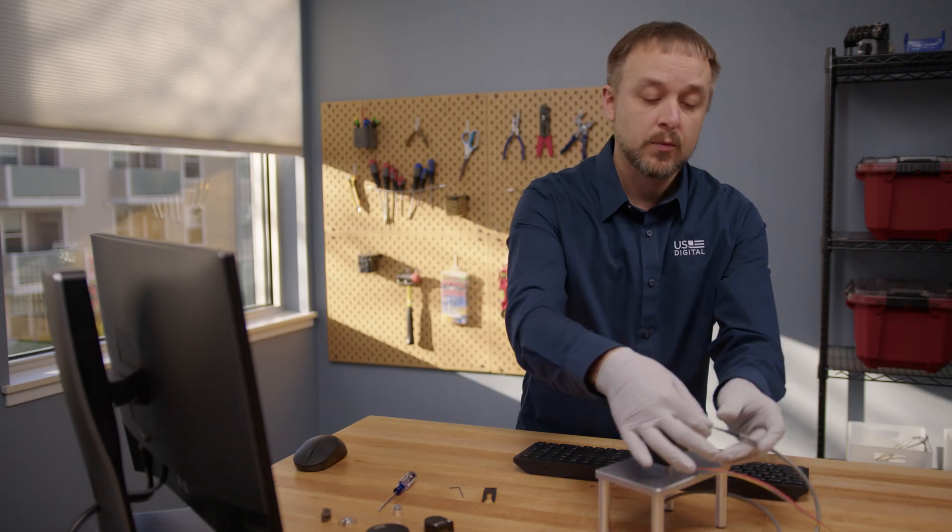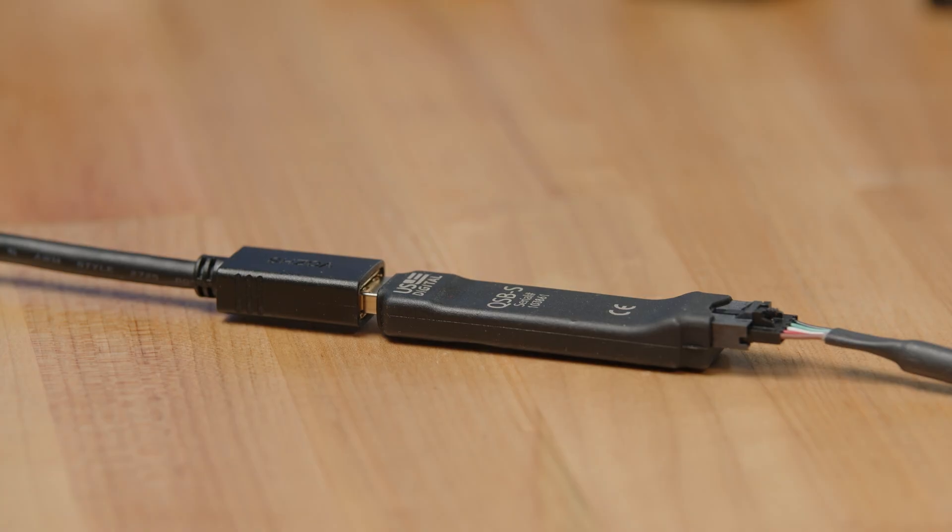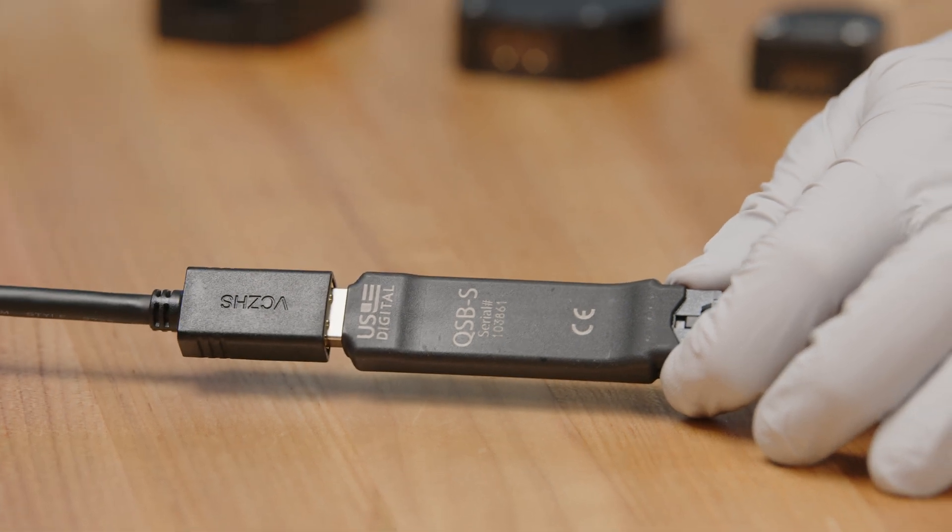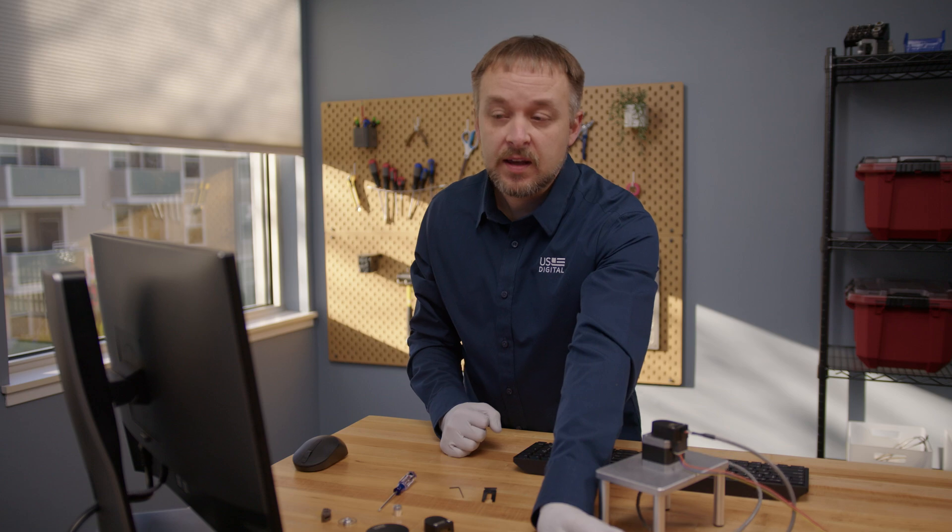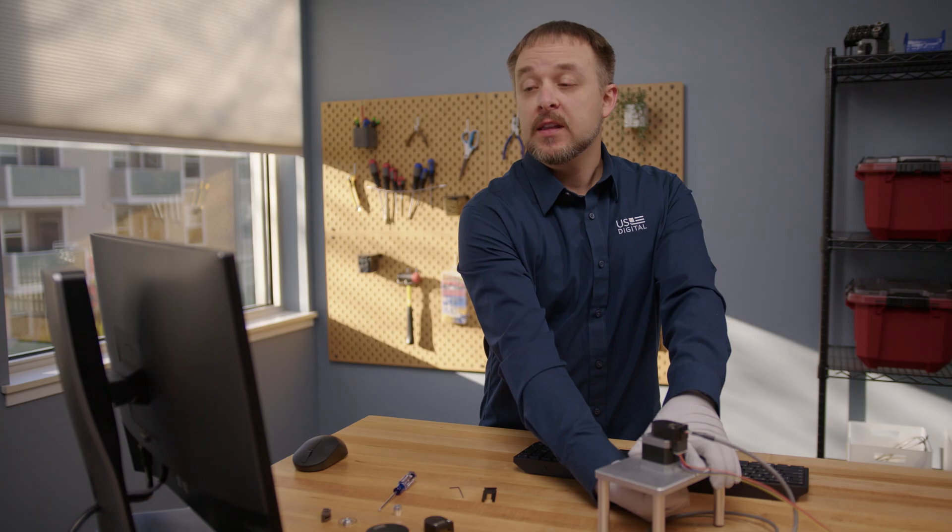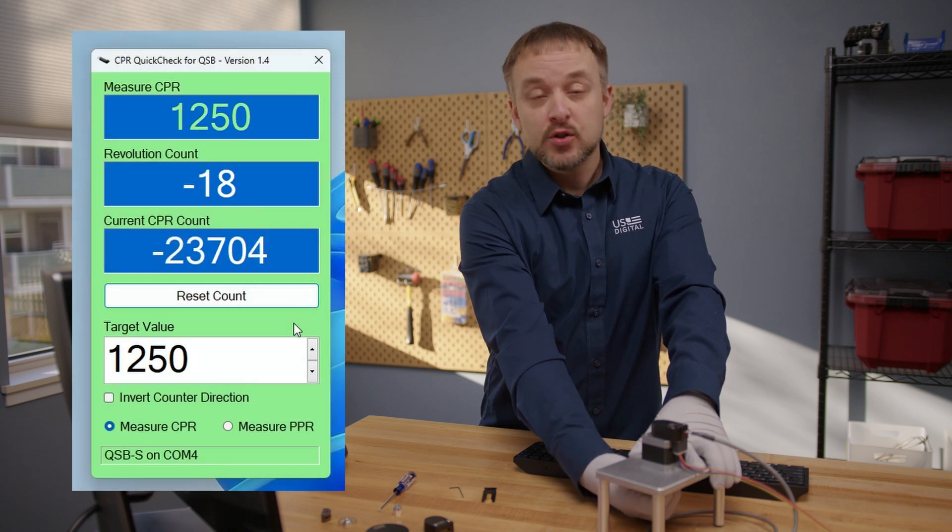So now we can run our test. For this test, we are using our QSB encoder to USB adapter, which connects an encoder up to any Windows PC. And we are using our free CPR quick check to verify the CPR and index on this encoder. And there you go. As you can see, we are now getting the correct CPR count. So we did have an alignment issue before.